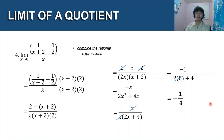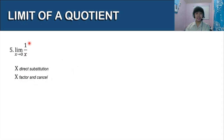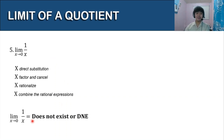For problem 5, the limit of 1/x as x approaches 0 — we cannot use direct substitution because it gives 0 in the denominator. We also cannot factor and cancel, rationalize, or combine rational expressions here since the numerator is just 1 and denominator is just x. Therefore the limit of 1/x as x approaches 0 does not exist, or DNE.